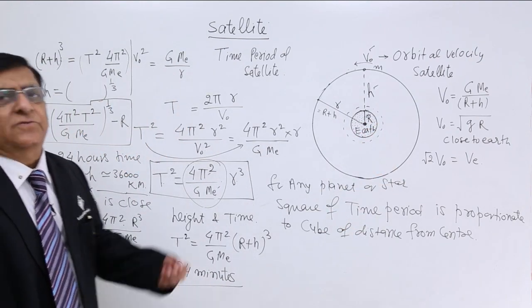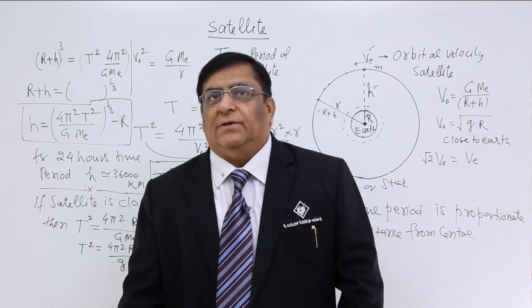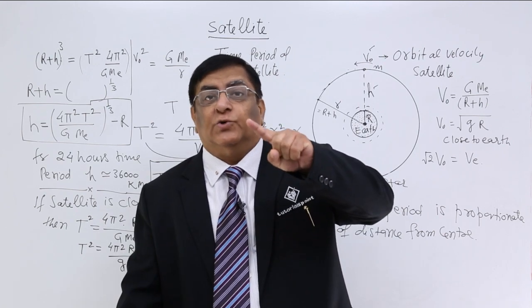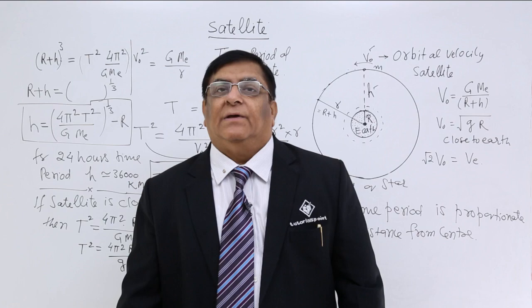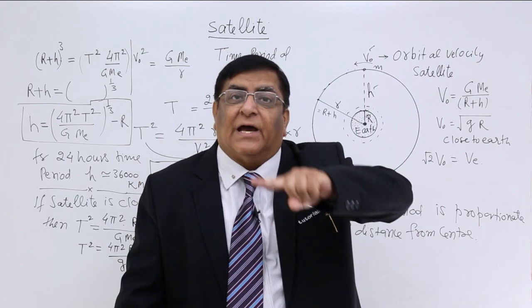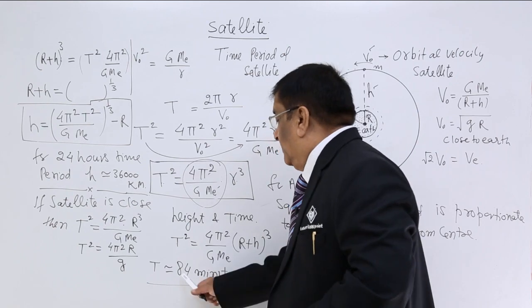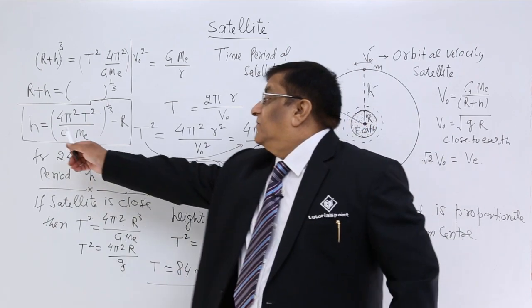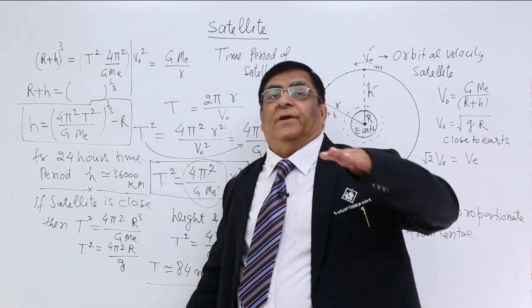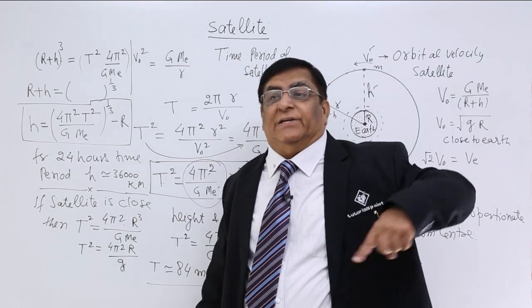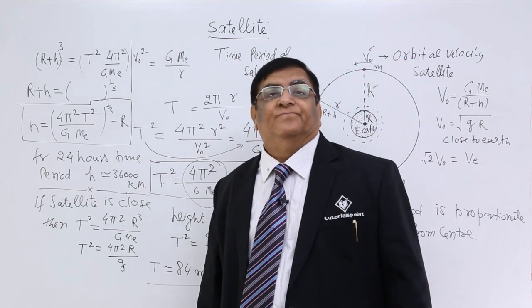What does it mean? A satellite close to the surface of earth will make one complete round in 84 minutes. 84 minutes is almost one and half hour. So a satellite close to the earth, if it should not fall on the earth we have to maintain a very high speed. But with this high speed the time period also decrease. And how much is that time period? 84 minutes. If we increase the height 36,000 kilometer, the time period goes on increasing and this becomes 24 hours.